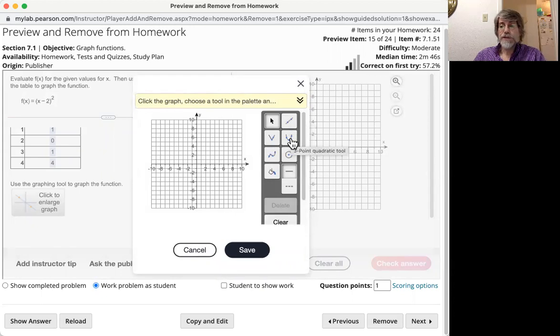So, you pick the palette that looks like a parabola and you'll notice as you hover over it that it says three-point quadratic tool. There's also one called parabola tool and that works a little different.